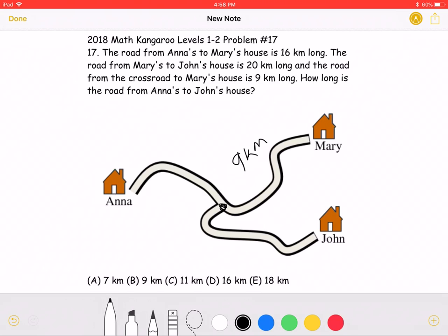This means that 16 minus 9, which is 7, will be the distance from Anna's house to the crossroads.